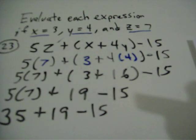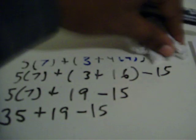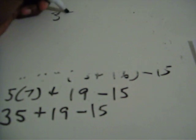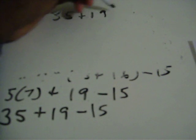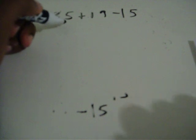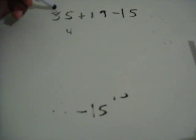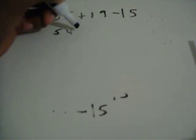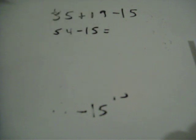Now all I have left is addition and subtraction. So I have 35 plus 19 minus 15. With order of operations, addition and subtraction are on the same level — you do whichever one comes first from left to right. So addition comes first: 35 plus 19 is 54, minus 15. So 54 minus 10 is 44, minus 5 more is 39.